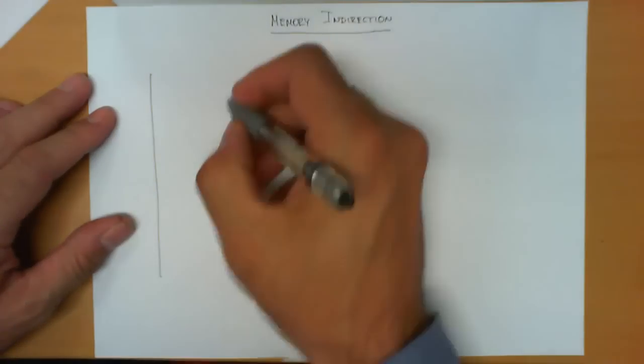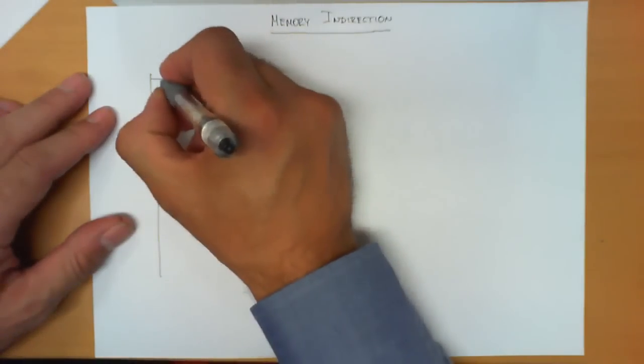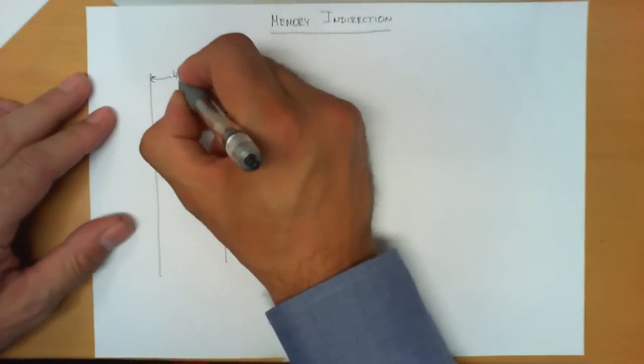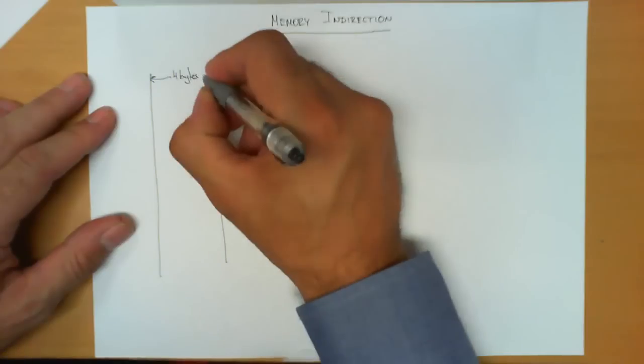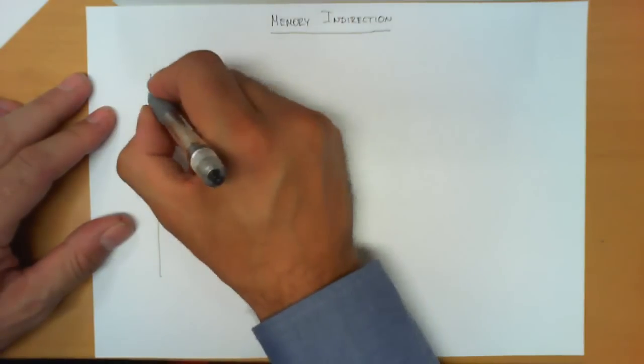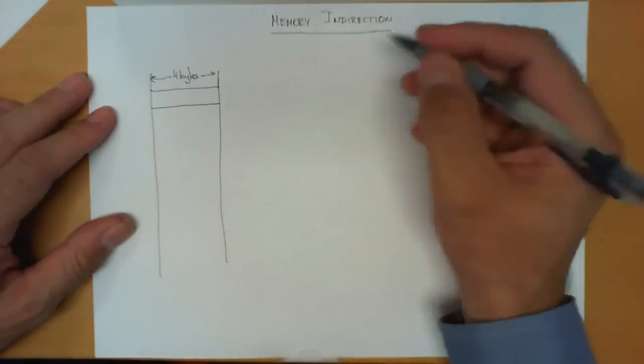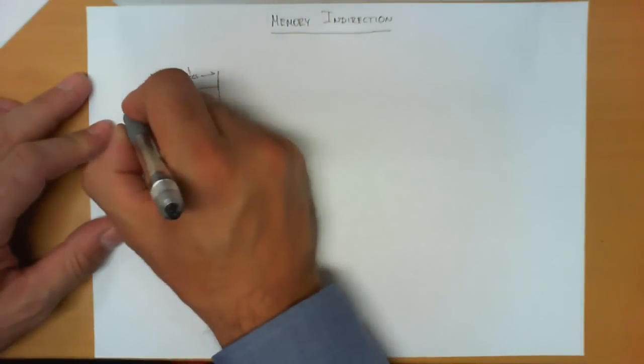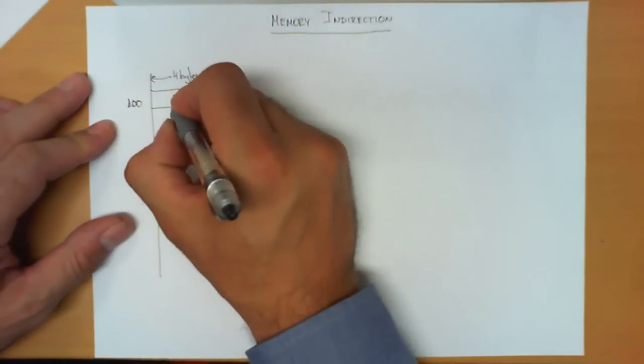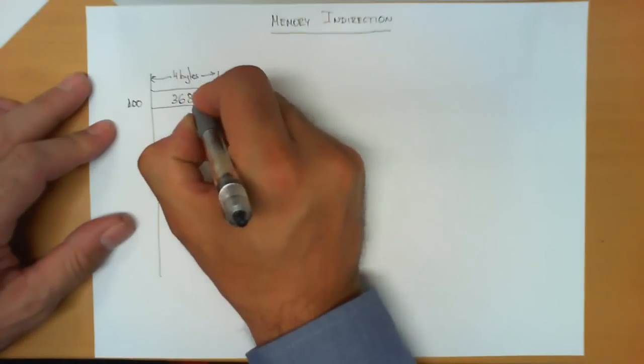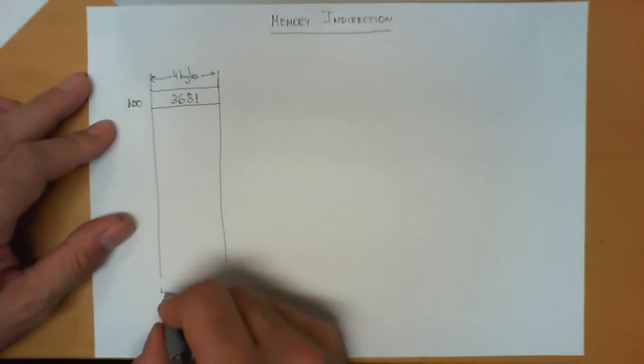Memory indirection assumes the following. First, let's think of a memory, and we're going to represent it such that each cell we're going to draw in this memory is actually made out of four bytes. So this cell over here contains four bytes. Let's assume that it's in position 100, and it contains the number 3681.